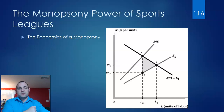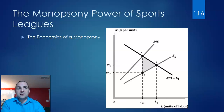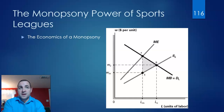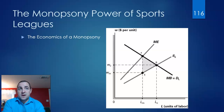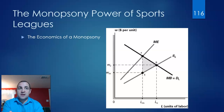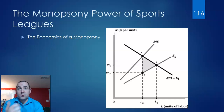They sound similar, and in reality their power is similar as well. While a monopolist uses its market power to drive the price up it charges consumers, a monopsonist uses its market power to drive down the prices that it pays either the producers it buys its inputs from, or the workers.